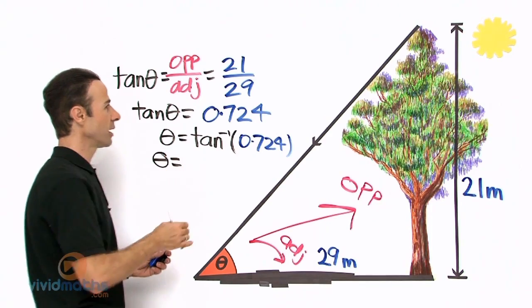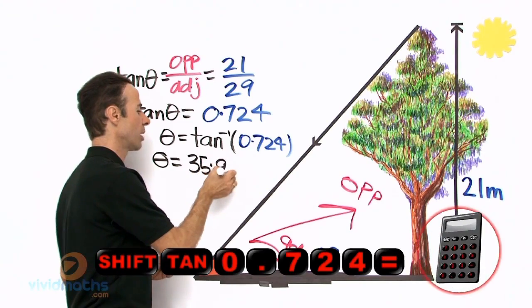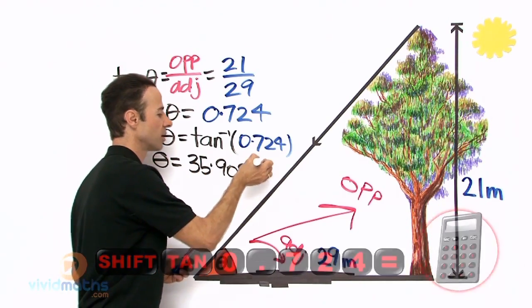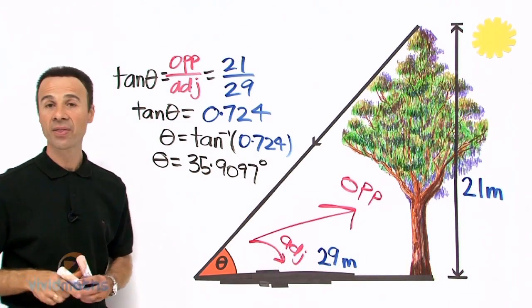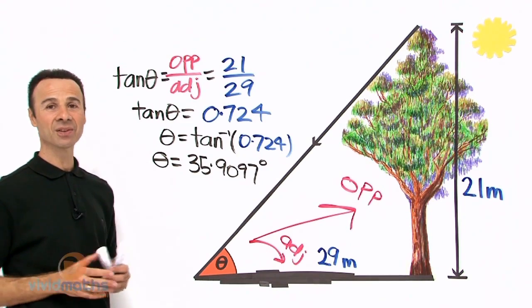So shift tan or second function tan 0.724, and that will yield a decimal degree. So theta equals, putting that in there, 35.9097 degrees. That is not minutes and seconds, it is a decimal degree, 35.9097 degrees.